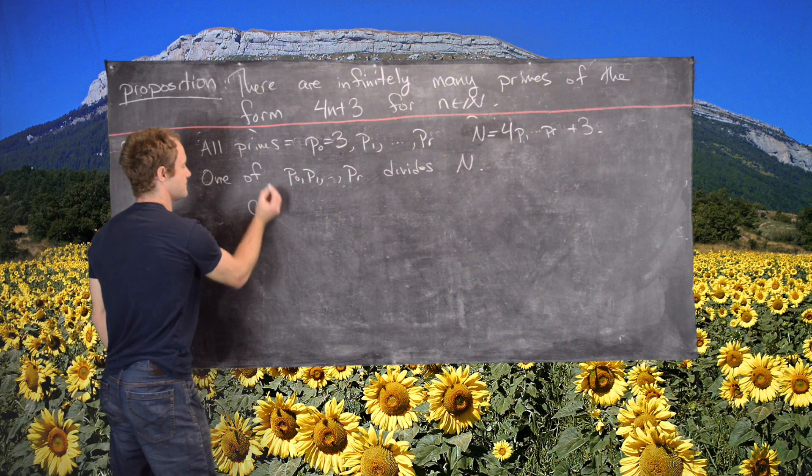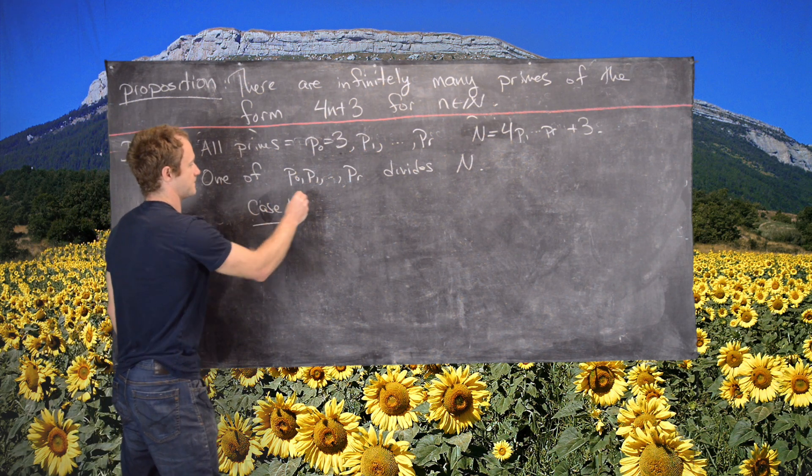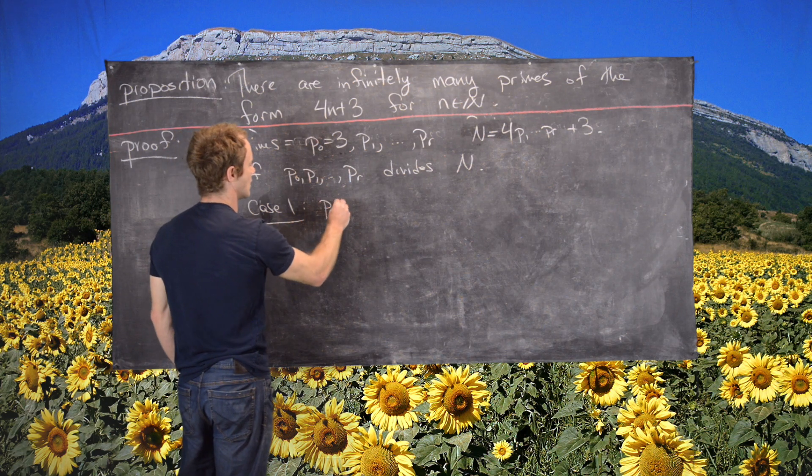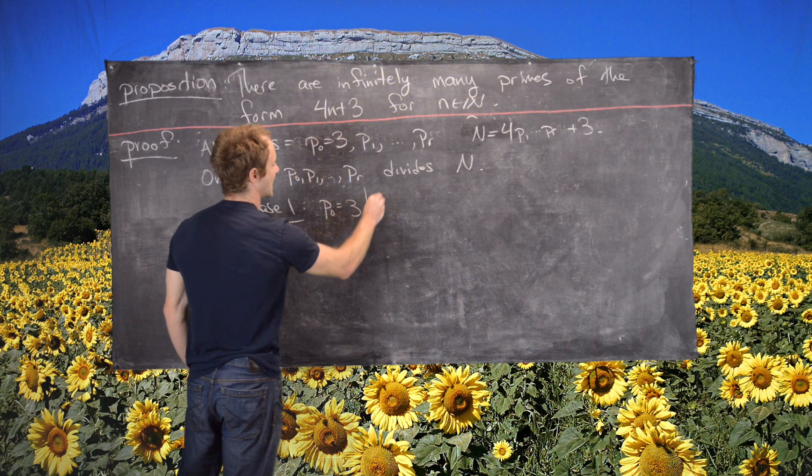So let's look at case number 1. Let's say P0, which equals 3, divides n.